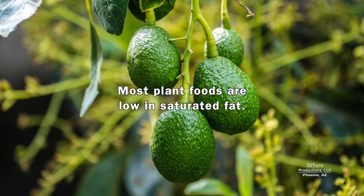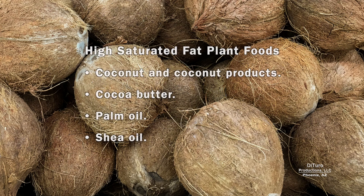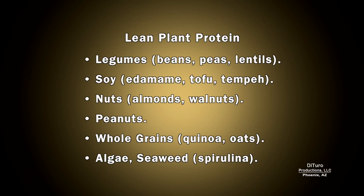Most plant foods are low in saturated fat. Exceptions include coconut and coconut products, cocoa butter, palm, and shea oil. Best sources of lean plant protein include legumes, soy, nuts, peanuts, whole grains, algae, and seaweed.